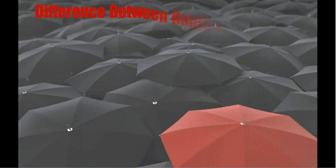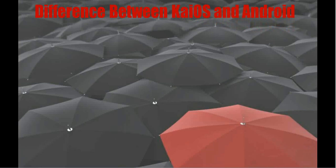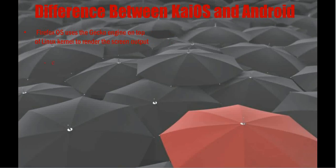Now let's see the differences between KaiOS and Android. KaiOS is used both in smartphones and feature phones, whereas Android is used only on smartphones. Firefox OS uses the Gecko engine on top of the Linux kernel to render screen output; coding is done using HTML, CSS, and JavaScript.